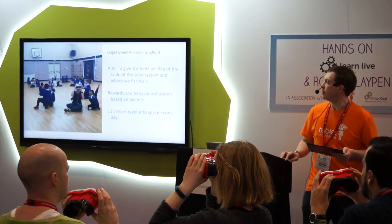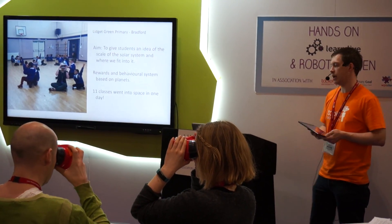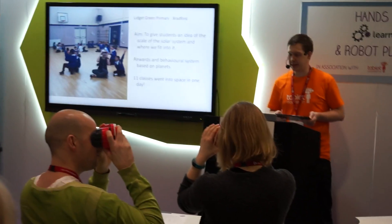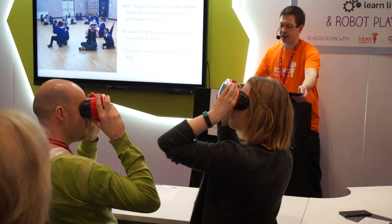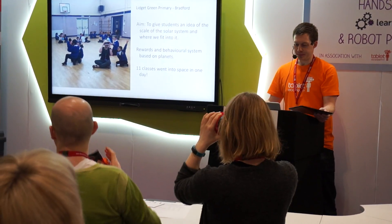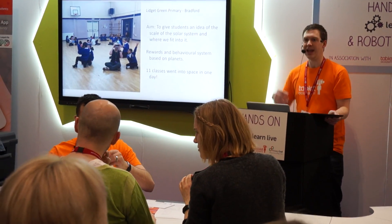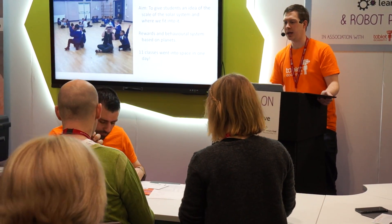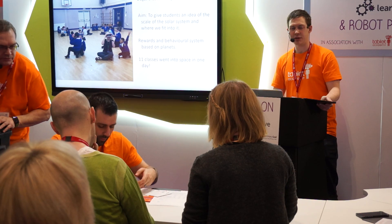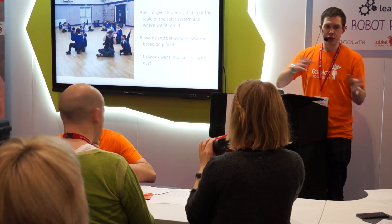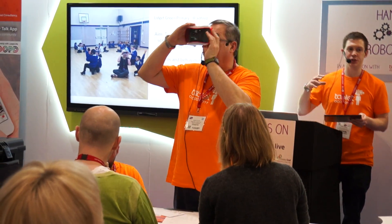This particular example is a school called Lidget Green Primary School, based up in Bradford. The aim with this project was to give students an idea of the scale of the solar system - where we, on planet Earth, fit into that system. The reason for this was that the school were introducing a rewards and behaviour system based around planets, so they wanted the students to move to different planets based on their behaviour - whether they go towards the sun or away from the sun.